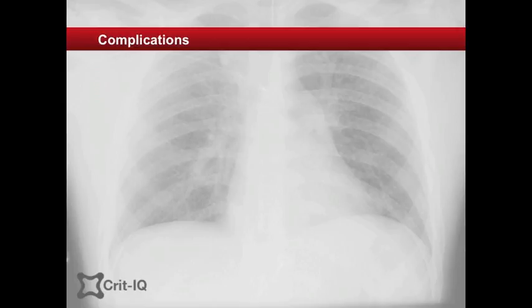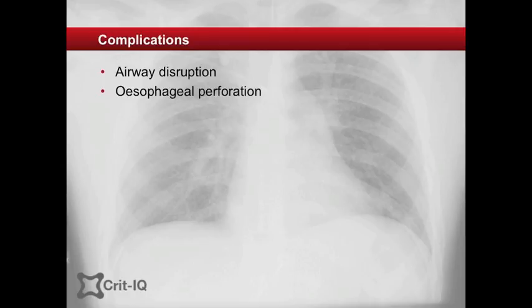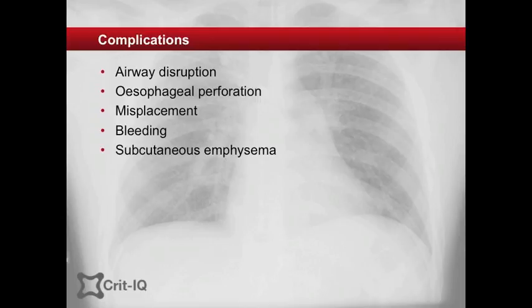The most important complication associated with surgical cricothyroidotomy is disruption of the airway, esophageal perforation and mispositioning. Bleeding occurs more frequently than with other methods, but is rarely of great concern. Subcutaneous emphysema may occur if the incision is too wide and should be controlled with sutures. Unchecked, this complication can result in inadvertent dislodgement of the tube as the subcutaneous tissue between the trachea and the skin expands.